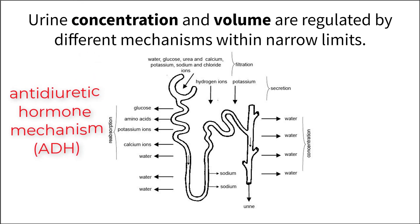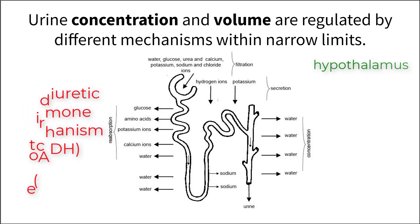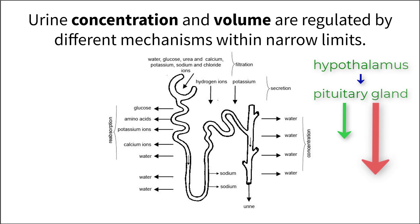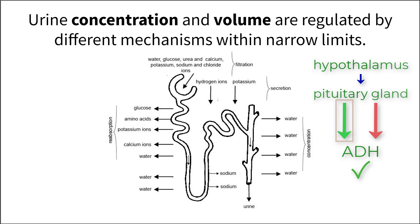Specialized neurons in the hypothalamus produce ADH and store it in the pituitary gland. When solute changes occur in the blood and interstitial fluid, it triggers the release of or inhibits the release of ADH. When osmolality increases, meaning there are more solutes in your fluids, ADH is released into the bloodstream.